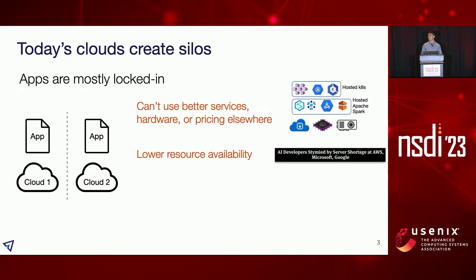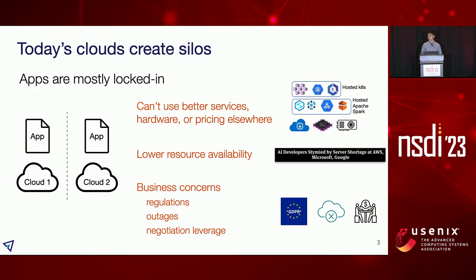Moreover, applications have lower resource availability. The most recent example is the current AI race — we are seeing cloud providers running out of GPU servers to rent. There are also quite a few business-related concerns about lock-in. If a business has fewer execution sites to choose from, it will be harder to meet data residency and sovereignty regulations. The business is also more vulnerable to large-scale outages and has lower negotiation leverage.